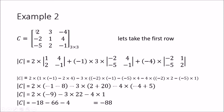Taking the first row, we have 2, 3, and minus 4. I take the first element, the 1,1 element. Since the first row and first column are associated with it, I remove or disregard the first row and first column, and I am left with the submatrix 1, 4, 2, minus 1. I find the determinant of that part.